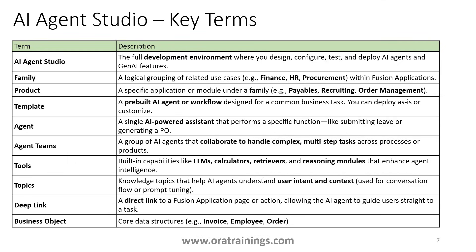The Tools component includes built-in functionalities such as selecting your LLM, a calculator, email, and different reasoning models to enhance agent intelligence. Topics are used to understand the context of user input. Deep Links allow you to navigate directly to a Fusion application screen — for example, providing a requisition number and navigating directly to view or edit that requisition.